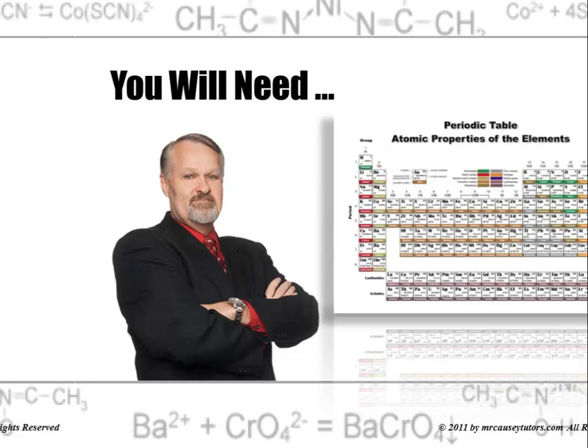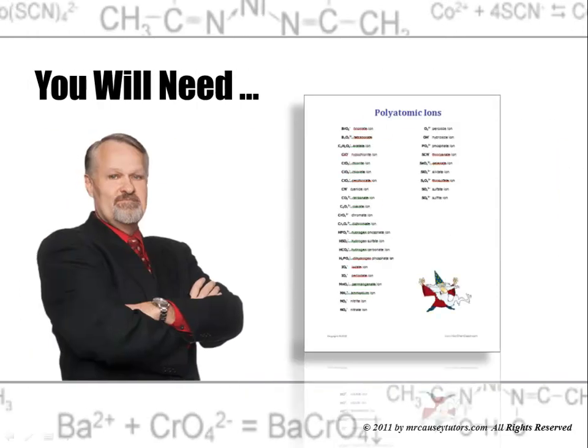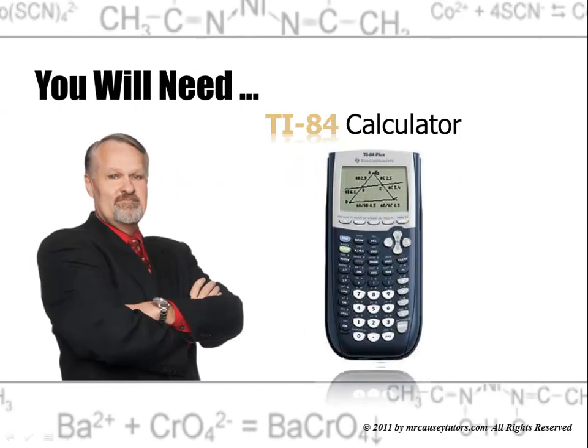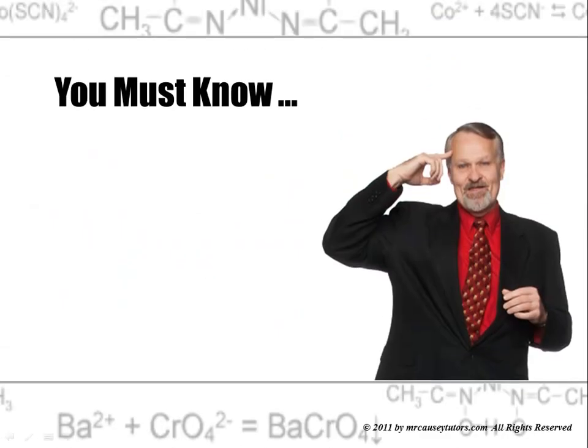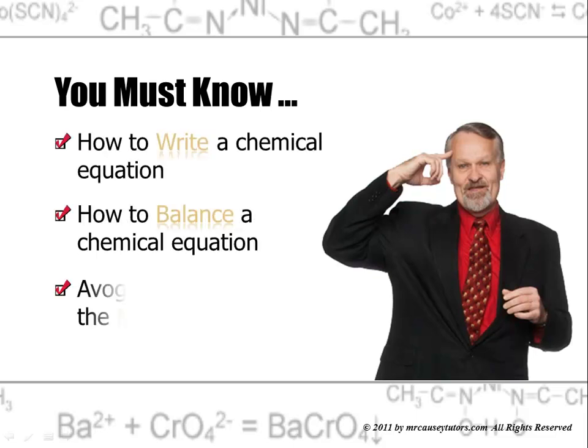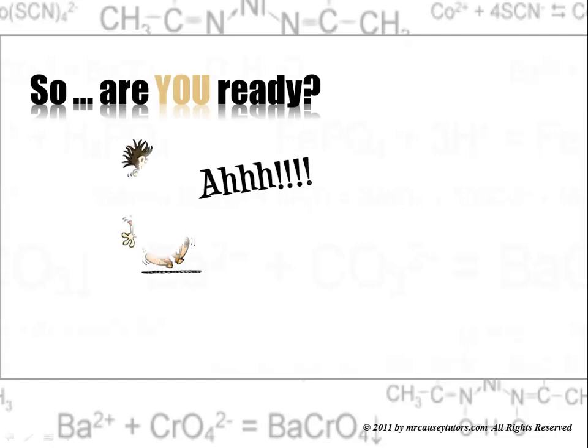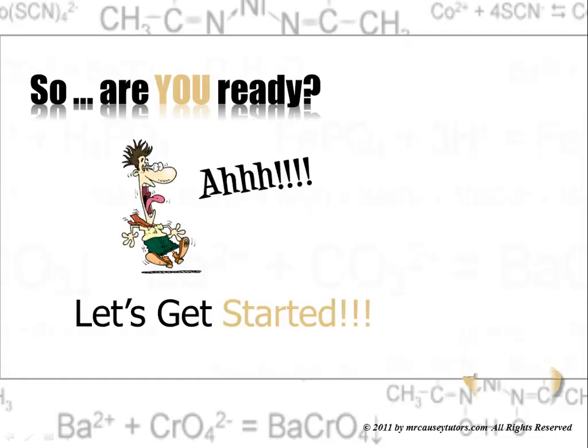You'll need a periodic table, polyatomic ions, and a TI-84 calculator. You must know how to write a chemical equation, how to balance a chemical equation, and you must know Avogadro's number and the mole. And of course, as always, there are videos on these. So are you ready? Let's get started.